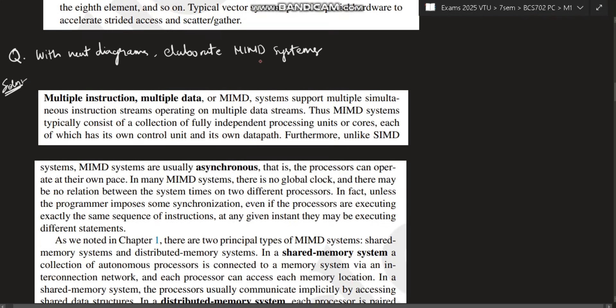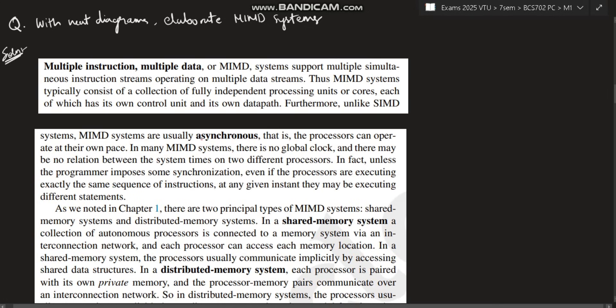With a neat diagram, elaborate MIMD systems - multiple instruction, multiple data. These systems support simultaneous instruction streams operating on different data. There will be multiple data and multiple instructions getting performed simultaneously. MIMD system consists of a collection of fully independent processing units, and each has its own control unit and its own data path. In SIMD it is not like that. MIMD are usually asynchronous - any operation can happen in any sequence. There is no sync between each of these instructions, they are performed independently. Whereas in SIMD there will be sync.